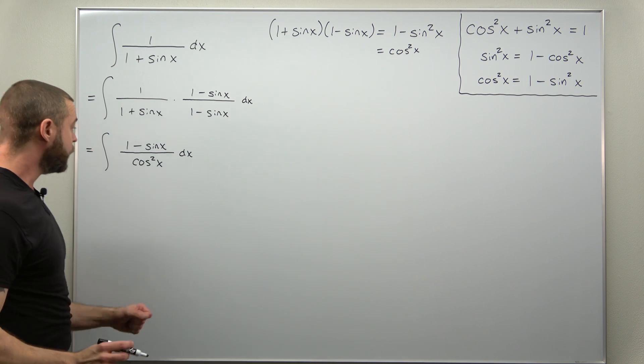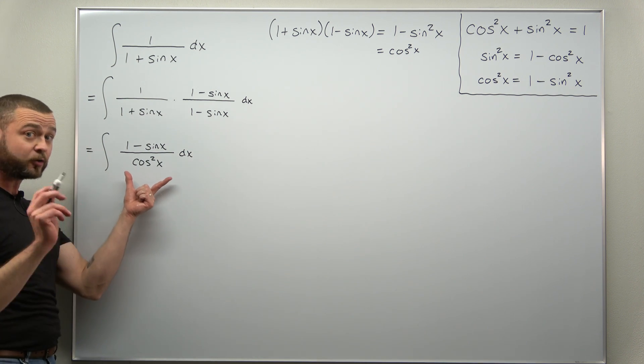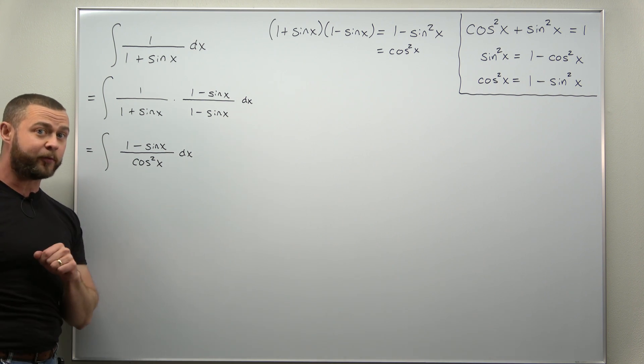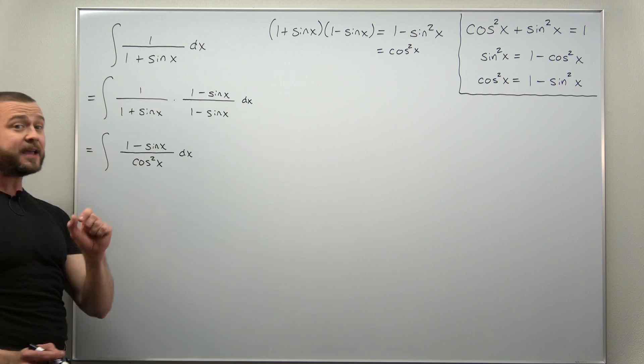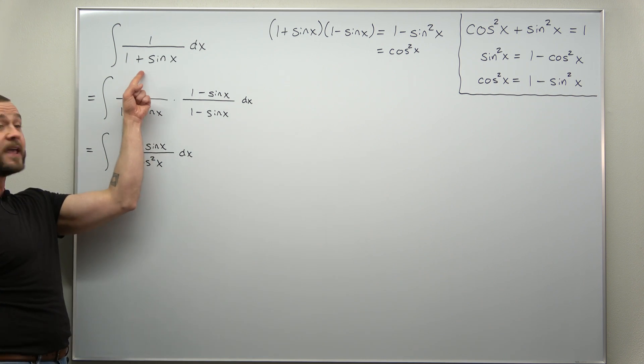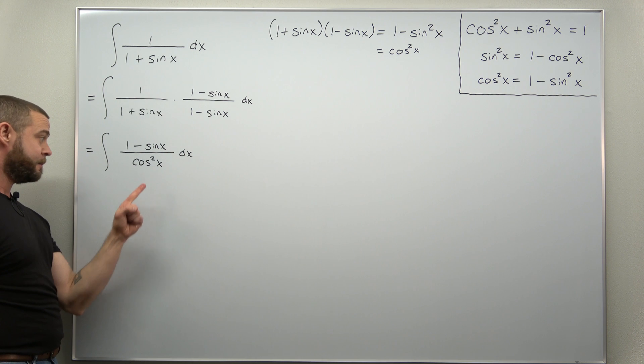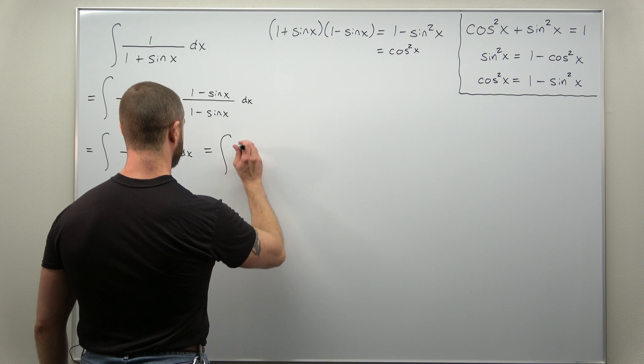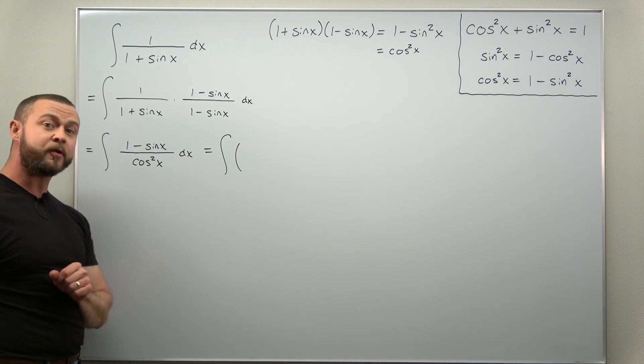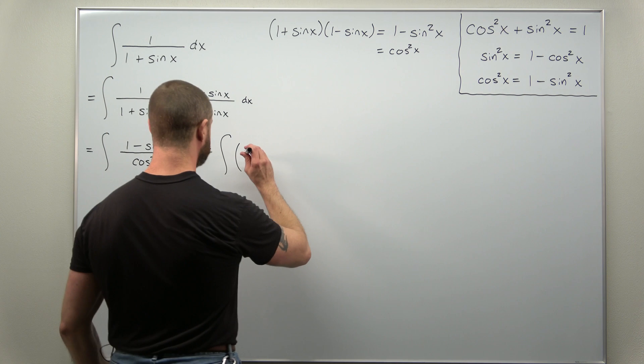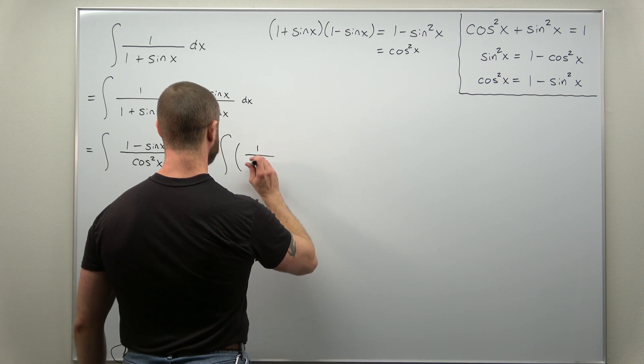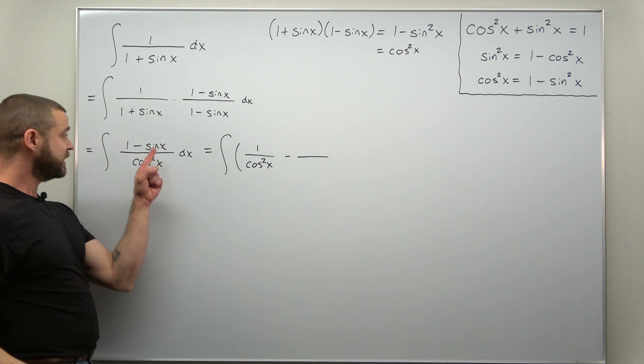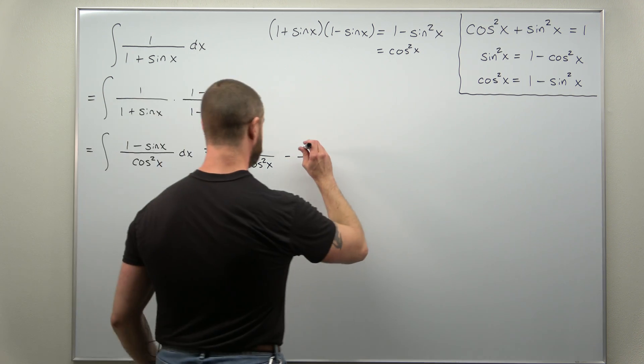Now why is this helpful? Well notice here we have now a single term in our denominator, cosine squared of x, whereas the original form for the integral contained two terms in the denominator. So here we can't split this fraction up but we can split this one up. We're going to rewrite that as two separate fractions: one over cosine squared of x, and then minus sine of x divided by cosine squared of x.